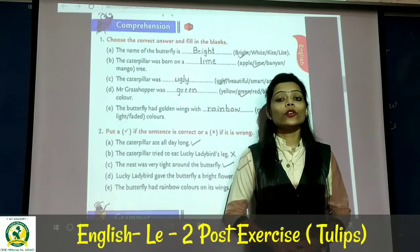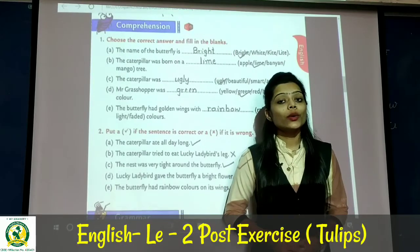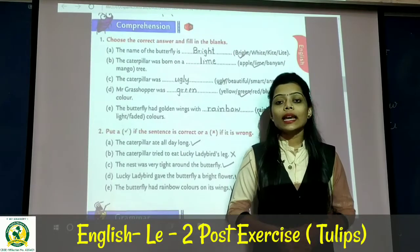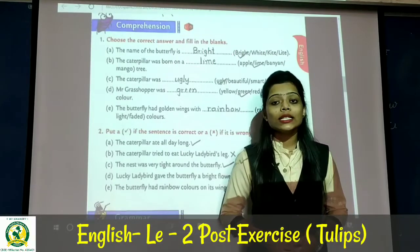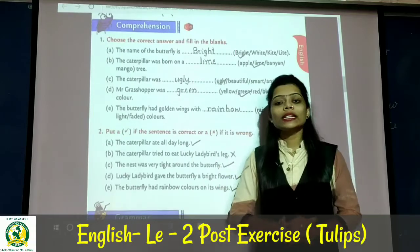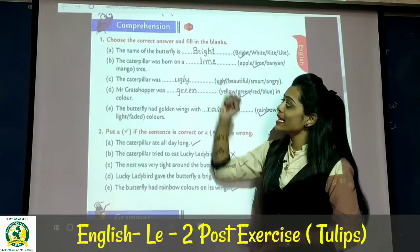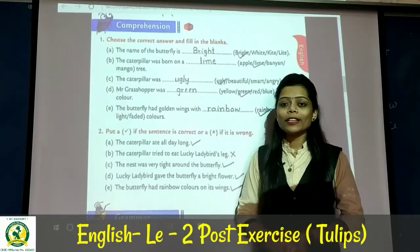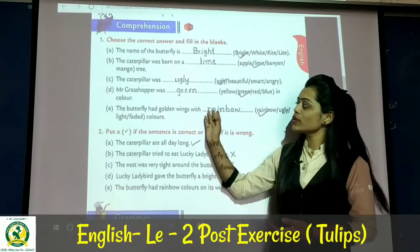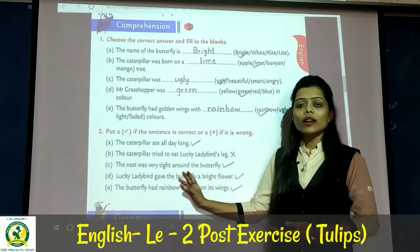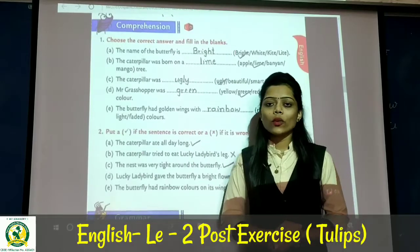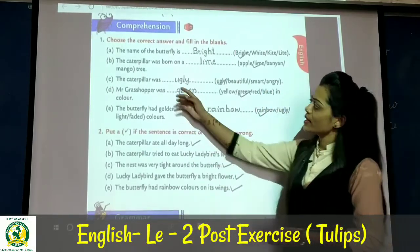First of all, take out your tulips and open page number 19. There is one exercise on page number 19 — choose the correct answer and fill in the blanks, and put right or wrong.